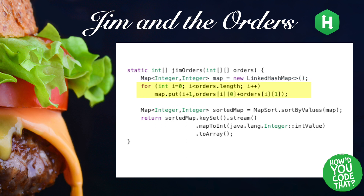Next, we use a loop to load our map, assigning a customer number as the key in our map, and the sum of the order number — denoted by the first dimension of the incoming 2-dimensional array, orders — and the preparation time, denoted by the second dimension of the incoming 2-dimensional array. Once all customers have been added to our map, we define another map named sortedMap, and initialize it with the results from the call to the sortByValues method on the map sort object, passing in our map.